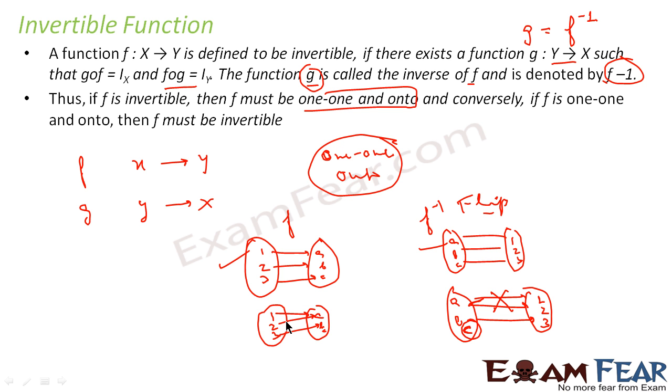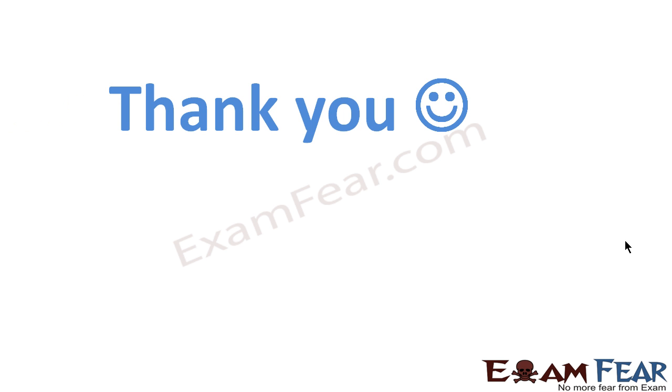Here we have shown that this function was not one-one, so this inverse was incorrect. Also, if it is not onto, this inverse is incorrect because for C there is no value.